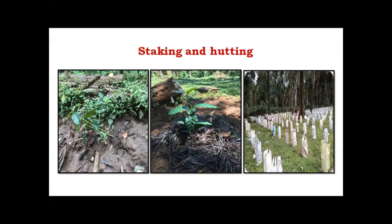Once planting is done, staking should be provided to give anchorage to the coffee plants. Since heavy winds can bend or knock down seedlings, staking must be provided to prevent this. Mulching and hutting should be done with collecting bags, fertilizer bags, Pongamia leaves, or Agewa leaves. Proper hutting helps protect the plants from monkey damage as well as cattle damage.